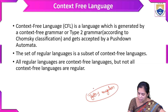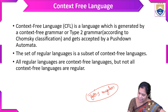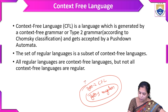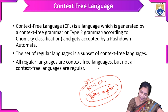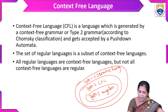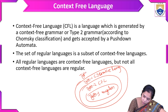Type 3 is regular, and type 2, which we are discussing, is context-free grammar — context-free languages. Type 1 is context-sensitive language, and type 0 is recursively enumerable language.